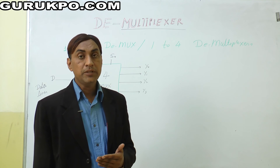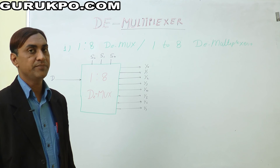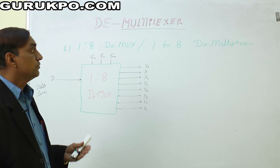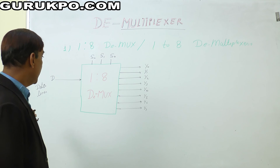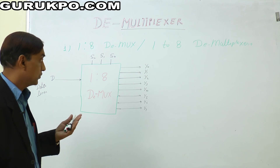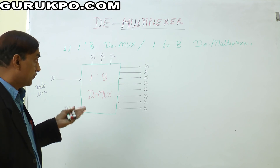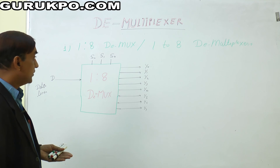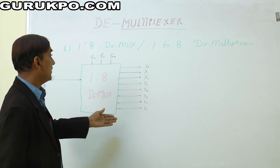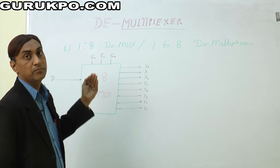The second example is the 1 to 8 demultiplexer. One data line comes in, three data selectors S0, S1, and S2 select the output, and the output comes on 8 lines from Y0 to Y7. These output lines are selected by the data selectors — that is why this is called the 1 to 8 demultiplexer.